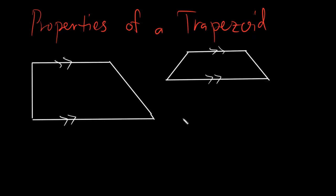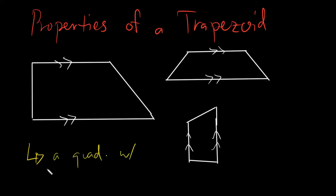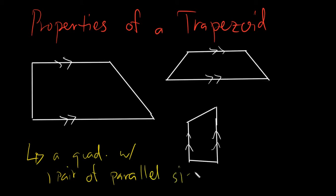You might ask, is it only applicable if your figure is like this? Your figure could also be parallel going up, like this one. So this would be the parallel side. Again, these are your trapezoids. By definition, trapezoids are simply a quadrilateral with one pair of parallel sides.